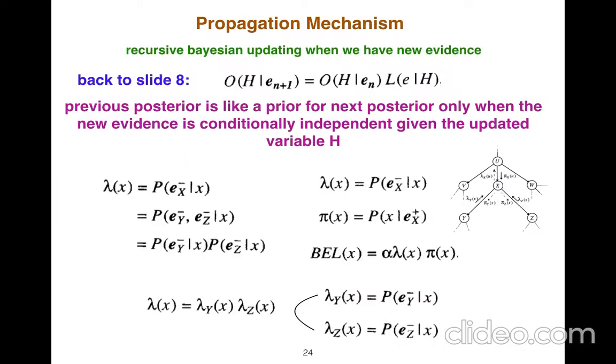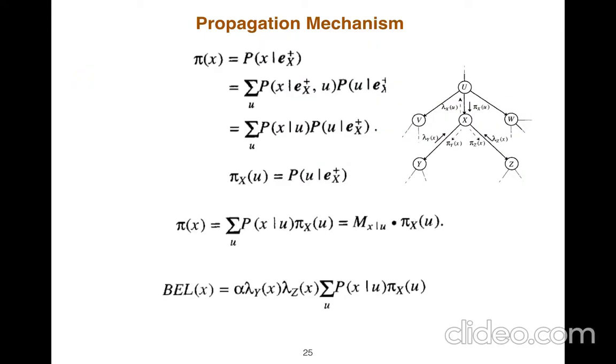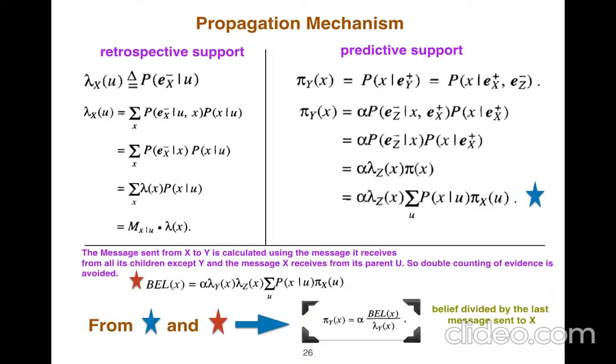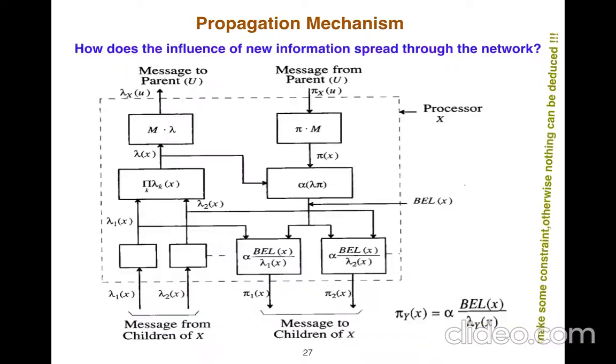For each node, we calculate lambda and pi, so it's like passing a message, that's why it's called message passing, and we calculate belief of x. By knowing the lambda, we can calculate the lambda and pi, we can calculate belief of x. This formula is incredibly important because the only information that we need to know is just pi and lambda.